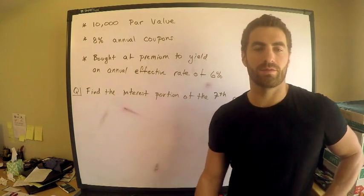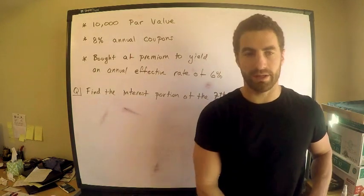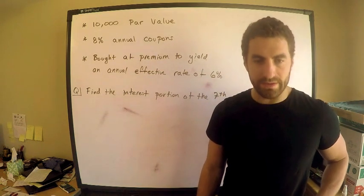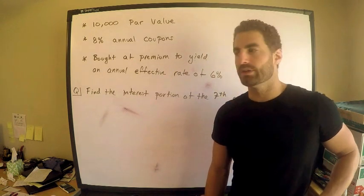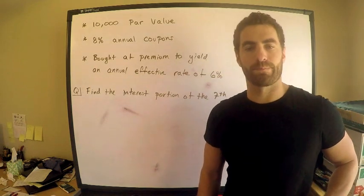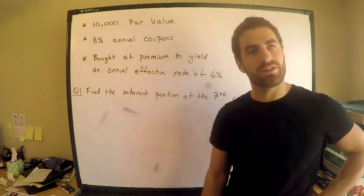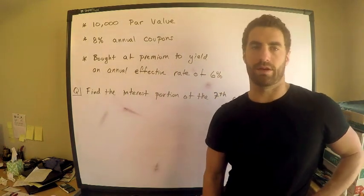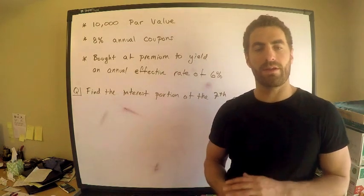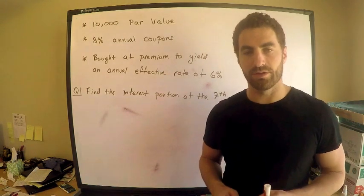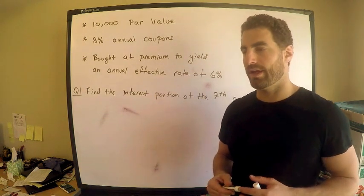Those coupon payments are basically compensation for them borrowing our money. We don't want to lend money for no reason — we want them to pay us something, which is where the coupon rate comes into play. At the end when the bond matures, we have what's called the redemption value, which is given back to us. The price of the bond may equal the redemption value, or be more or less than it.